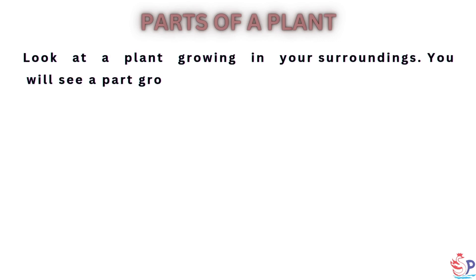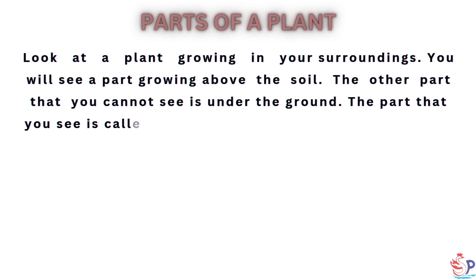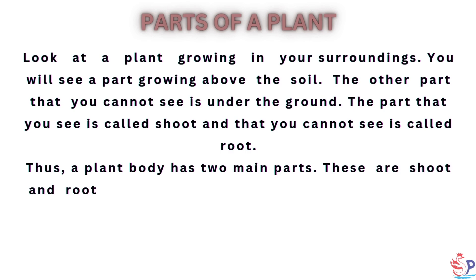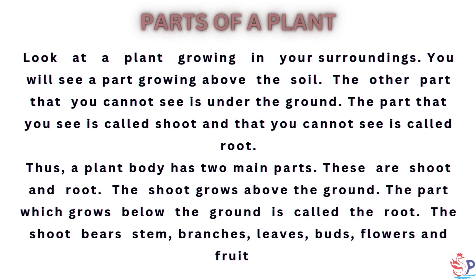Look at a plant growing in your surroundings. You will see a part growing above the soil; the other part you cannot see is under the ground. The part that you see is called the shoot, and the part you cannot see is called the root. Thus, a plant body has two main parts: shoot and root. The shoot bears stem, branches, leaves, buds, flowers and fruits.